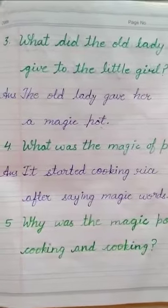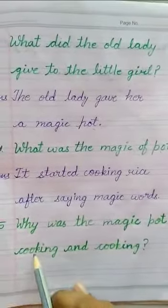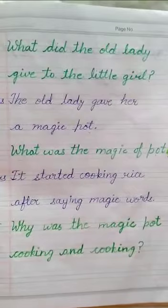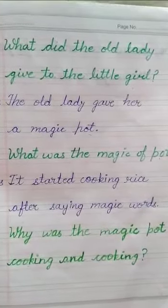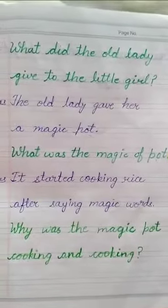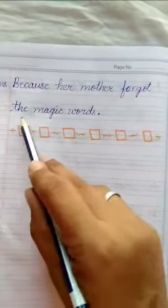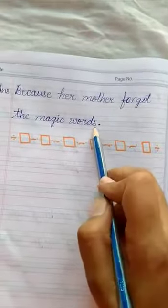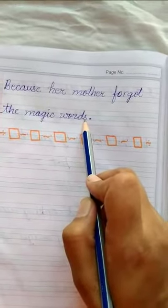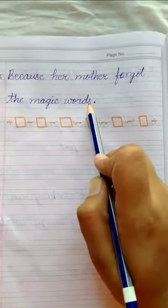Fifth question: Why was the magic pot cooking and cooking? Because the mother forgot the magic words to stop it.